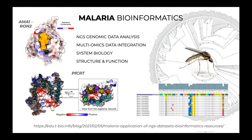Our talk today will focus on how we can use the available data and connect the dots. It has been almost 20 years since the first reference genome assemblies were published for Plasmodium falciparum, the deadliest malaria parasite, and for Anopheles gambiae, the most important mosquito vector of malaria in sub-Saharan Africa. There are now reference genomes for all human parasites and nearly 40 important vectors around the world.